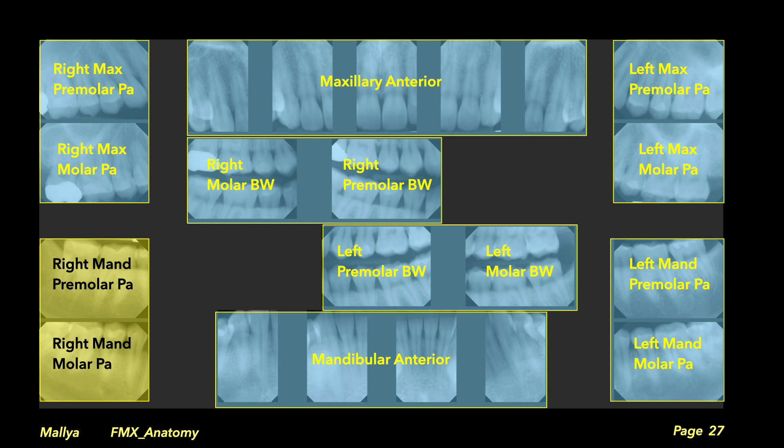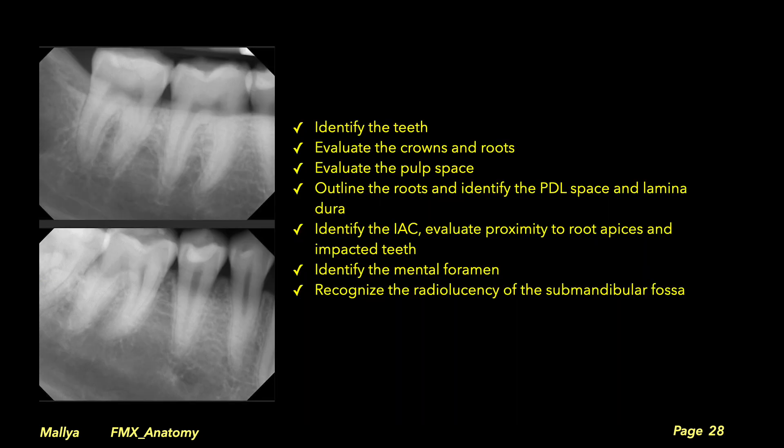We move on to the right mandibular posterior region, following the same systematic sequence: identify the teeth; evaluate the crowns and roots; evaluate the pulp space; outline the roots and identify the periodontal ligament space and laminar dura; identify the inferior alveolar canal and assess its proximity to the root apices; identify the mental foramen; and finally, recognize the radiolucency of the submandibular fossa.